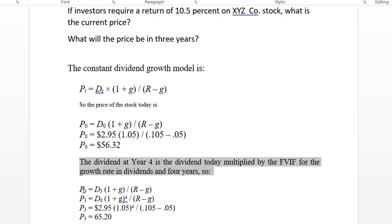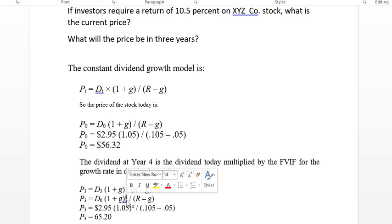So P3, which is our price in three years, is equal to D3 times 1 plus G over R minus G. So the way that we're going to do this is, you notice there's a little four right here to the fourth power. Well, we're looking for the third year, so we're going to go one more year out on that.